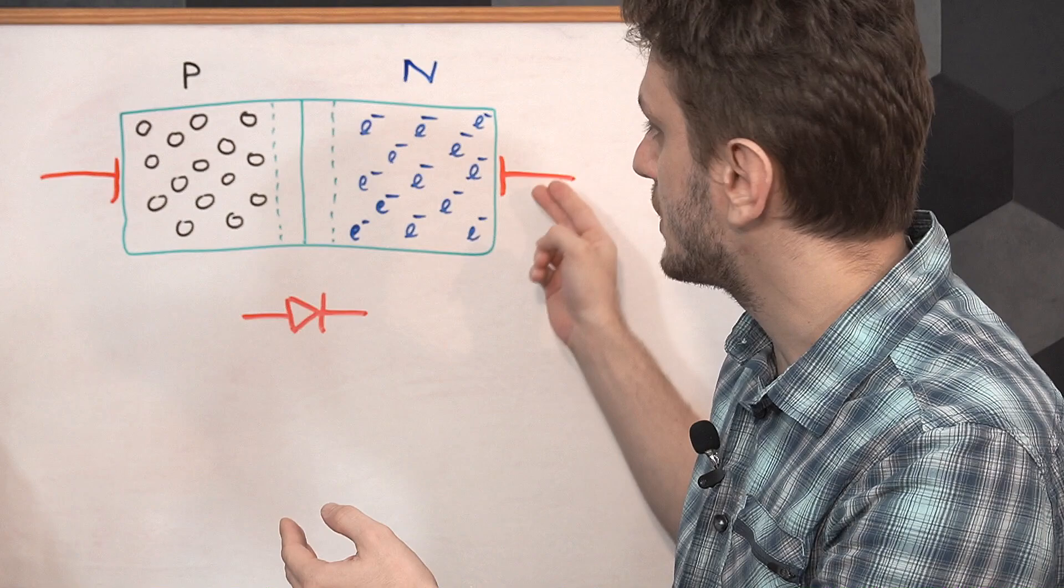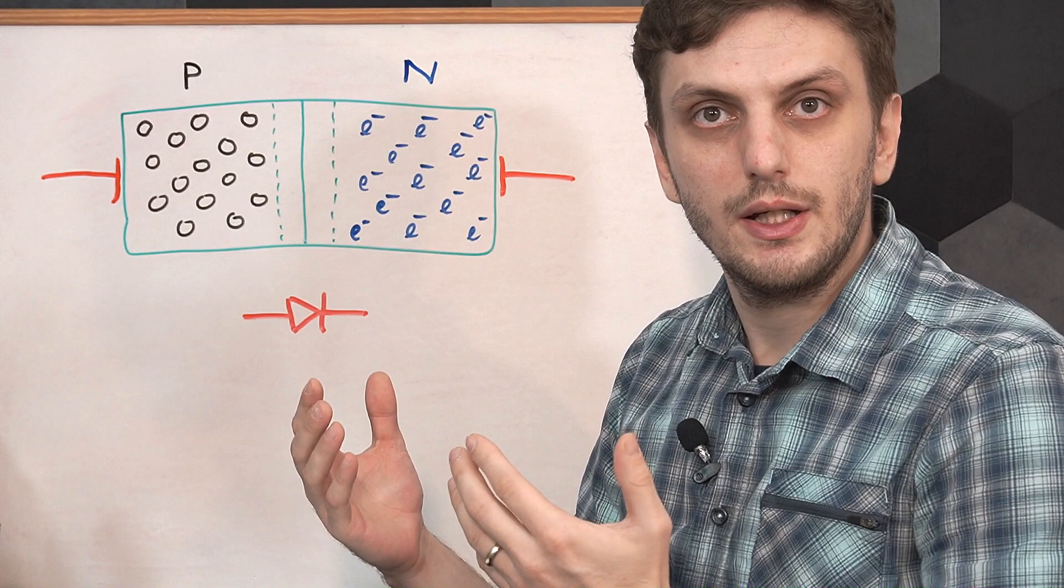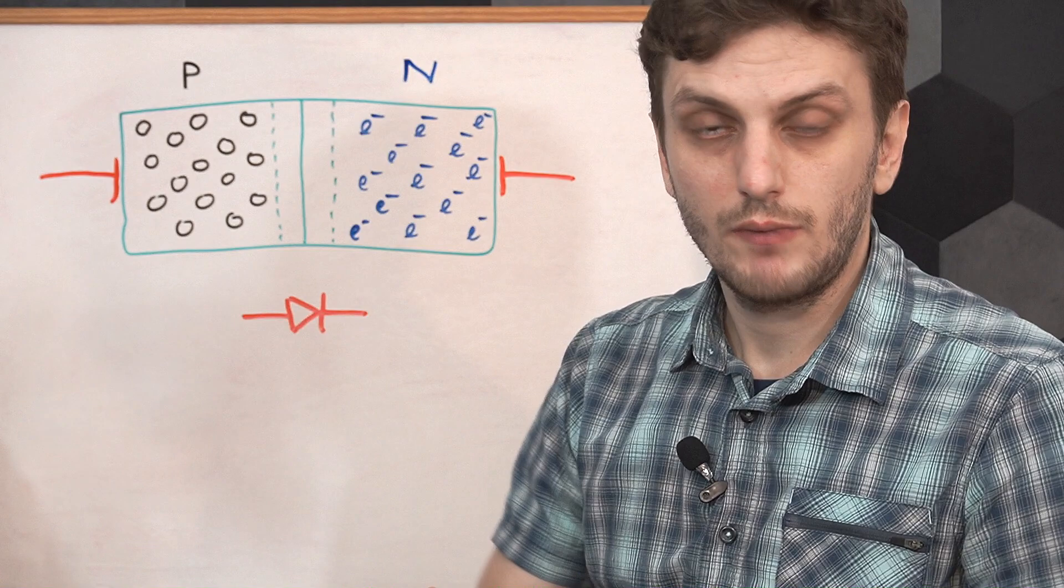To get the diode to conduct, you need to apply a positive potential to the P region, negative potential to the N region, and the voltage of at least around 0.6 volts, so that the two charge carriers are pushed together, and they can recombine again, and will get the diode to conduct. So new charge carriers will be formed, and then they will recombine, and the current will be passing through the diode.